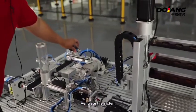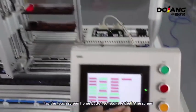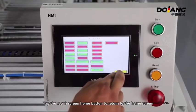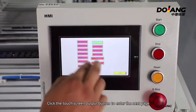Ventilate the system. Tap the touch screen home button to return to the home screen. Click the touch screen output button to enter the next page. We can click each box to trigger each component.